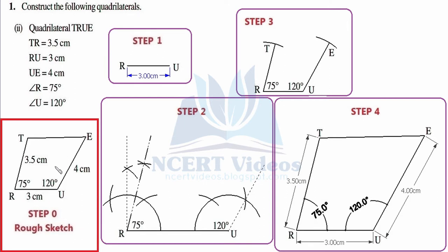In step number one, we simply connect RU with a distance of 3 centimeter. Using a ruler, we construct line segment RU, jot down its measurement as 3 centimeter, and place vertices R and U. Pause and try to construct it yourself.